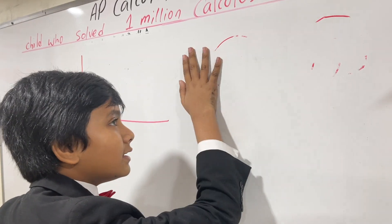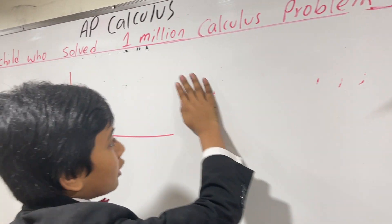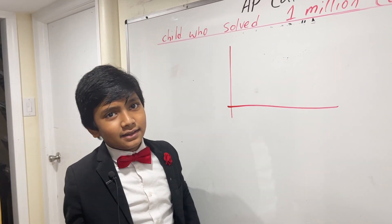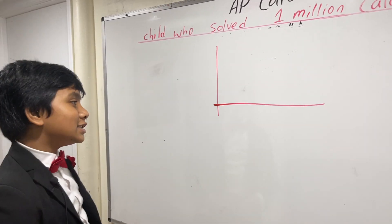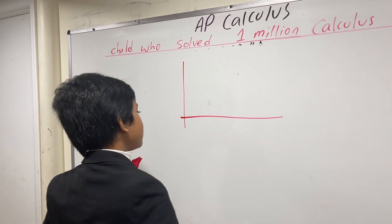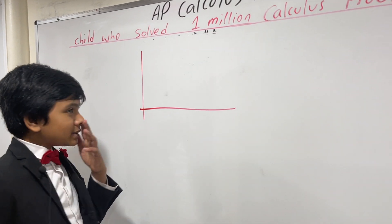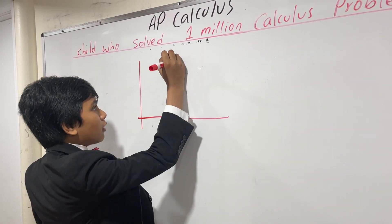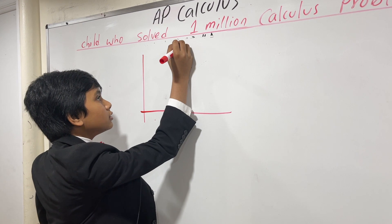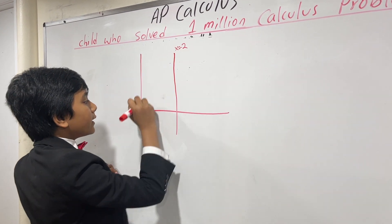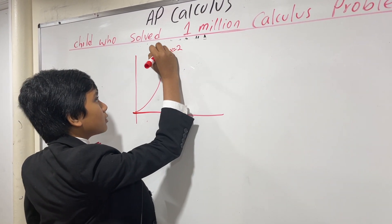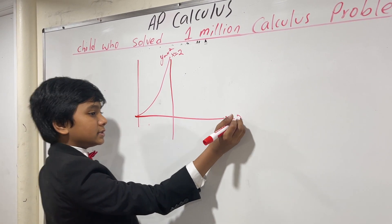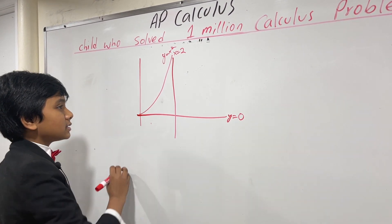This is AP Calculus, not AP Kitchen. Okay, so let's begin. What I'm going to do is draw the line x equals 2, and the line y equals x squared.